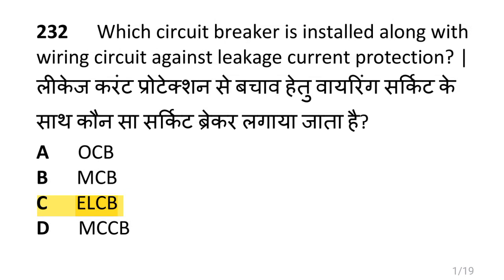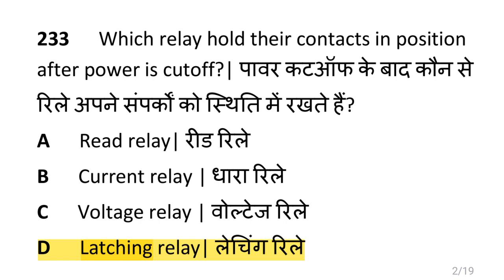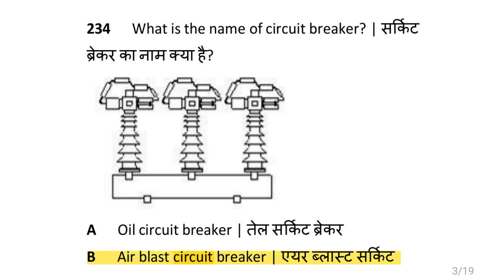Dear friends, we are going to see circuit breakers and relays. Which circuit breaker is installed along with wiring circuit against leakage current protection? That is ELCB. Which relay holds its contacts in position after power is cut off? That is a latching relay. What is the name of the circuit breaker that is an air blast circuit breaker? That is ABCB.